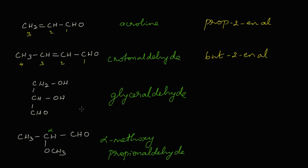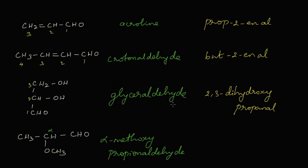For glyceraldehyde: the first, second, and third carbons each carry an OH group at the second and third carbons — so we write 2,3-dihydroxy. There are three carbons — propane — and with aldehyde we replace 'e' with AL. The IUPAC name of glyceraldehyde is 2,3-dihydroxypropanol.